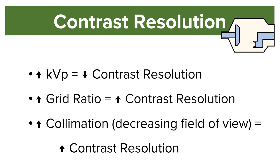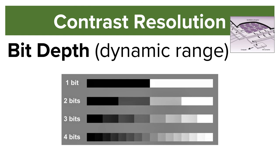One factor that affects contrast resolution after x-rays hit the image receptor is bit depth. Bit depth is the number of shades of gray a pixel can represent. For example, a 2-bit system can show 4 grays, but a 4-bit system can show 16 grays.